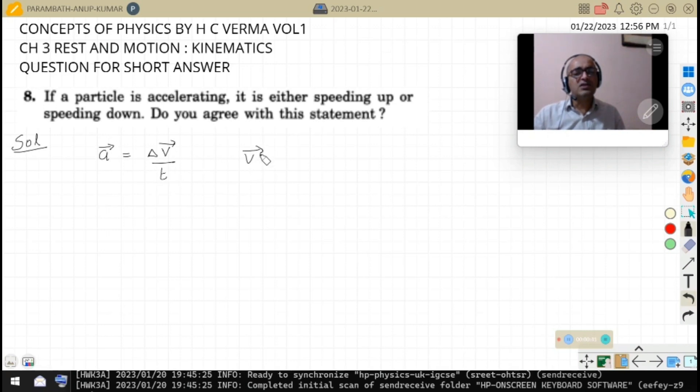Velocity is a vector quantity which has got both magnitude as well as direction. We say the velocity has changed.